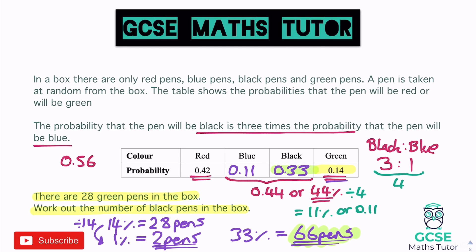Quite a lot going on there: we figured out what was missing, split it in a ratio, then applied reverse percentage. Green was 14% = 28 pens, so 1% = 2 pens by dividing by 14. Then for 33% of black we multiplied by 2 to get 66. Here's one more question to try before we finish.